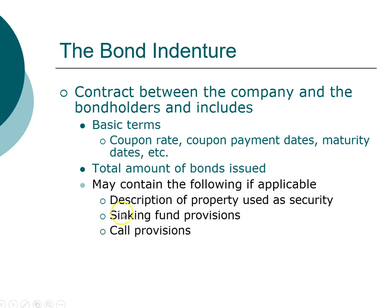The sinking fund provision protects investors. In theory, a company does not have to pay off its face value until the maturity date, but that represents a large amount of money and investors may be worried the firm may not have enough money. A sinking fund provision forces the company to put aside a little bit of money each year so that on the maturity date they have saved up a significant portion of the face value they need to repay investors.